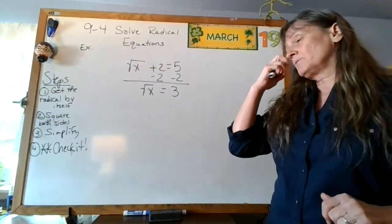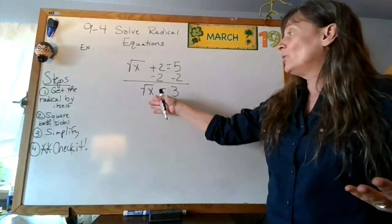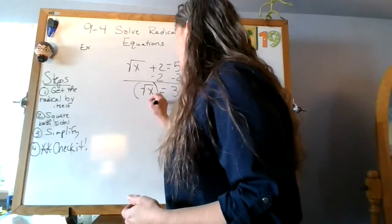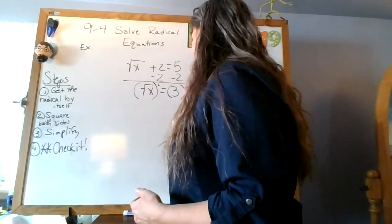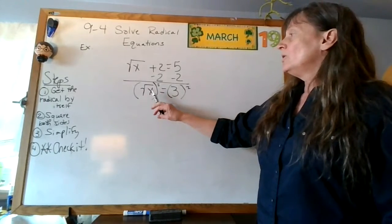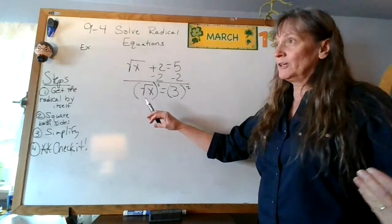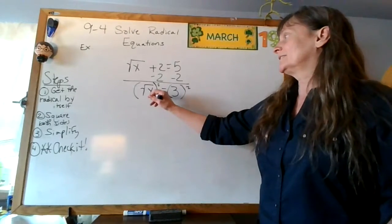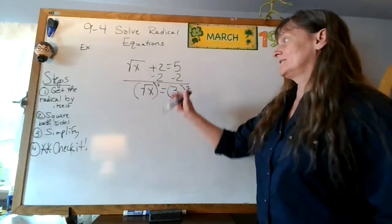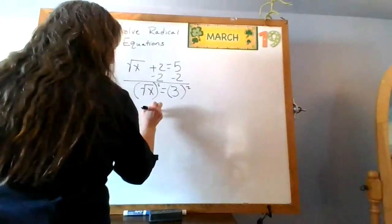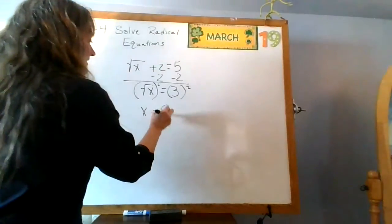That brings us to step two: square both sides. The reason we're doing this is I can't have a negative number under there, and I have to do the same thing to both sides. The square root of x squared gives me just x — whatever's in there, I put it down. Once I square it, I no longer have my square root. So I get x equals three times three, which is nine.